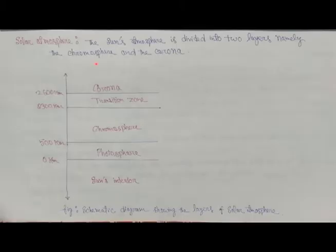The Sun's atmosphere is divided into two layers, namely the chromosphere and the corona. Here is a schematic diagram of the different layers of the Sun's atmosphere. Here is the Sun's interior, and above this is the photosphere which ranges up to 500 kilometers, then there is chromosphere, then a transition zone.